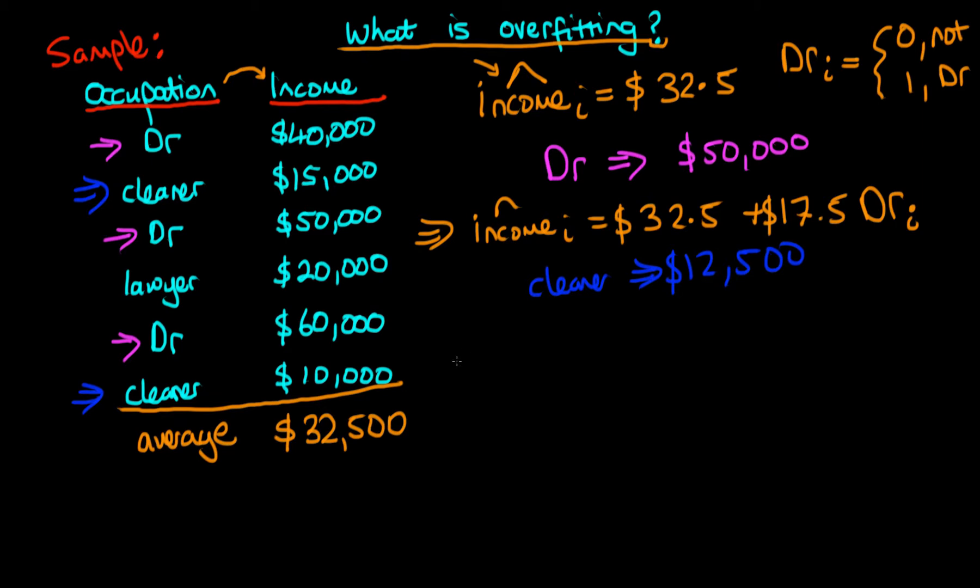Similarly, we could include this information in a predictive model if we just said an individual's predicted income is equal to what we have before, $32,500 plus $17,500 times the dummy variable doctor, and then what we need to do is add on the difference between the cleaner salary and the overall average. Because that's actually going to be a negative quantity, instead we're going to take away a difference based on whether or not an individual is a cleaner. We see that the difference between $32,500 and $12,500 is actually $20,000. So we're going to take away $20,000 times a dummy variable cleaner, which has the same sort of form as doctor except obviously we're replacing whether or not they're a doctor with whether or not that individual is a cleaner.